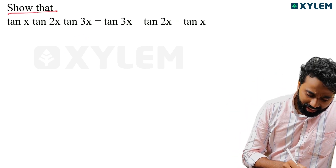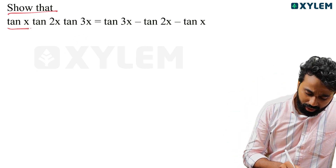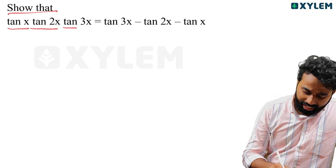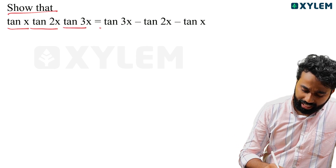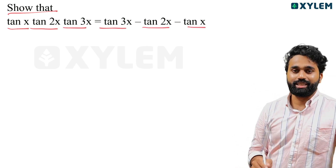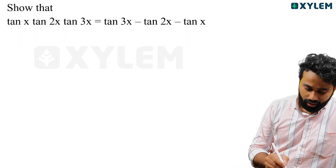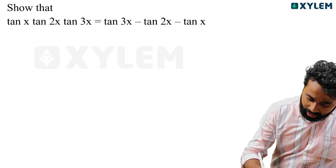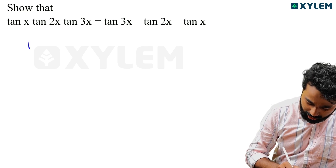Show that tan x into tan 2x into tan 3x is equal to tan 3x minus tan 2x minus tan x. If you have a model exam, you can use this step.